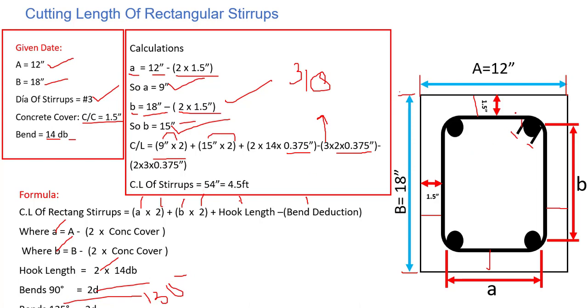So the cut length of the stirrup for this rectangular shape is 54 inches, which is 4.5 feet. This is how we can find out the cut length of a rectangular stirrup. Hope you really understand the session. I will see you in the next.